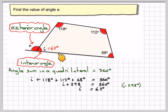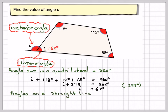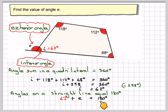So, we know that this angle here is 62. But these two angles here are on a straight line, and angles on a straight line equal 180 degrees. So, we can now form another equation. We can now say that 62 plus E is equal to 180 degrees. Taking 62, we're going to get that E is equal to 118 degrees.